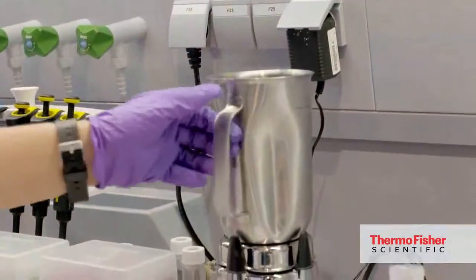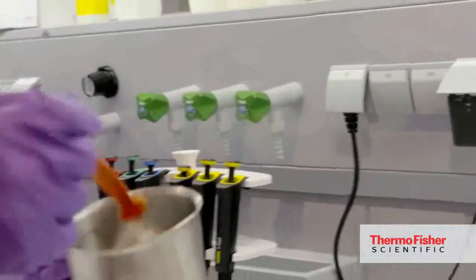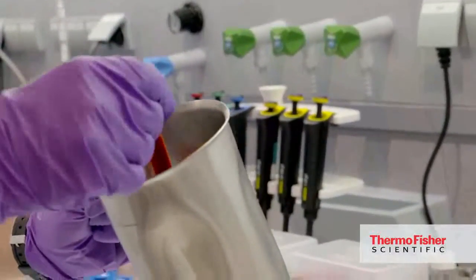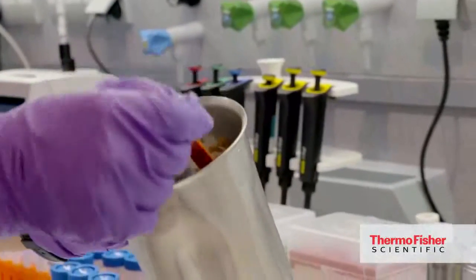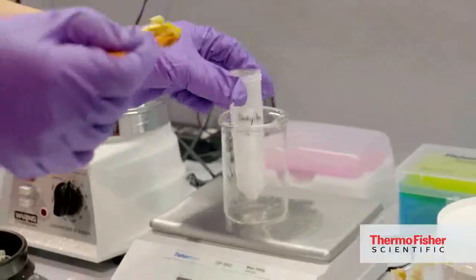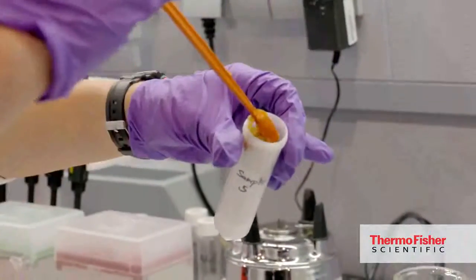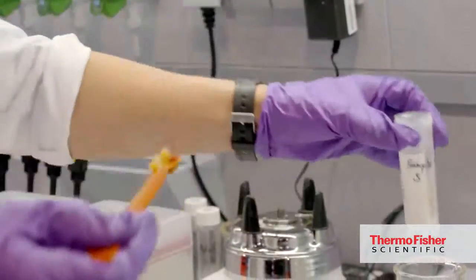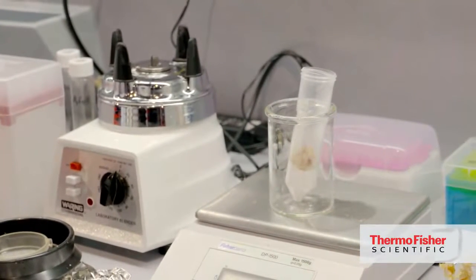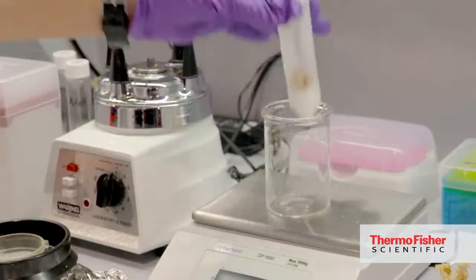So we have the homogenate. We take the homogenate for the classical catchers method, very similar to what we did for the ASE extraction. So we weigh 10 grams of sample directly into the extraction tube, which is a pre-prepared tube. It already contains some salts and can also contain buffers.